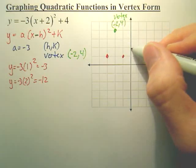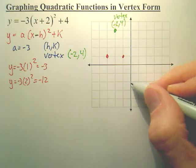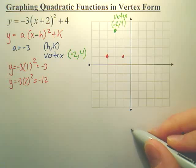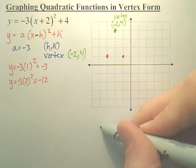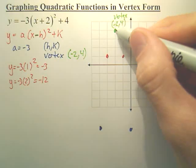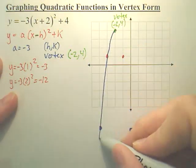So you go down 1, 2, 3, 4, 5, 6, 7, 8, 9, 10, 11, 12. Oh boy, I'm way down here. And then this one's going to be down 12 as well. And then you have your nice parabola.